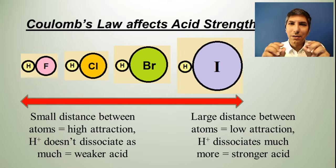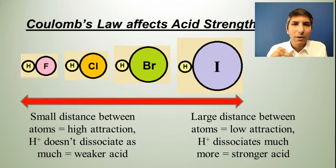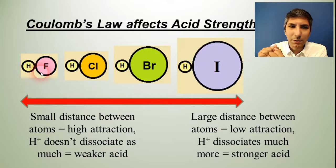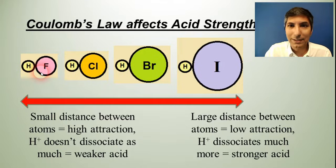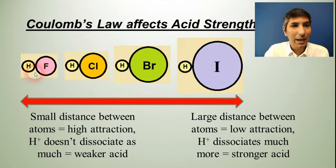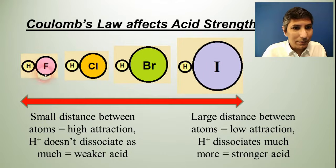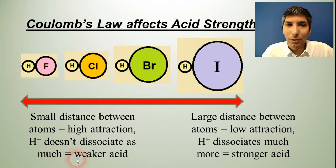If you have two atoms that are very small, then they can get very close to each other. So H and F are both very small atoms, so they can get very close to each other. And because they have that small distance between them, they have a very strong interatomic attraction. That's Coulomb's Law. That's the distance part of that equation. And as a result of that, since there's a strong attraction, this H right here is not going to fall off or be removed as readily as it will for the others. So that's the reason why HF is a weak acid, and all your other hydrogen halides are strong acids.